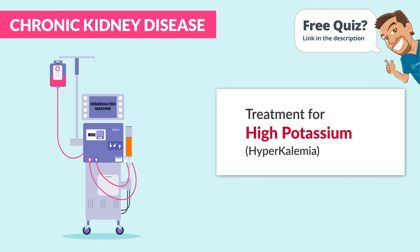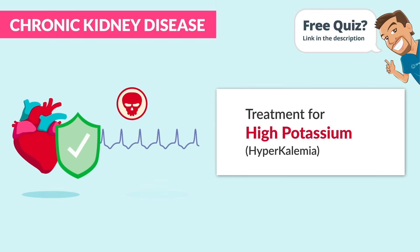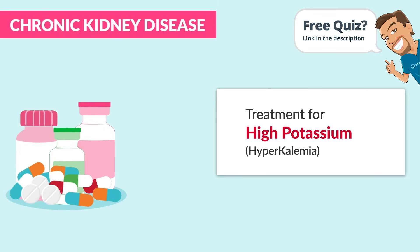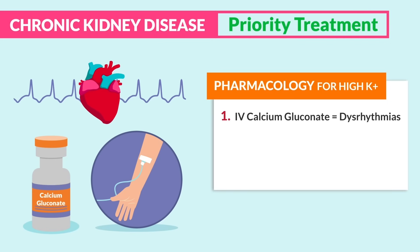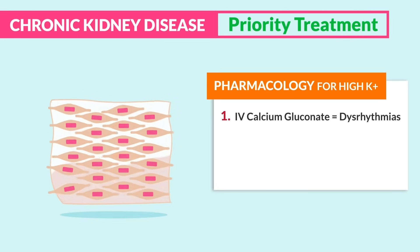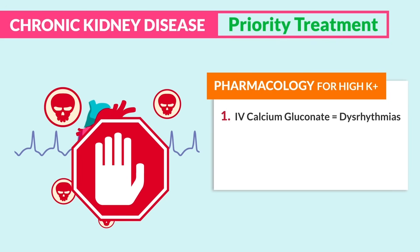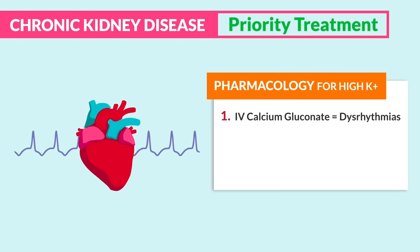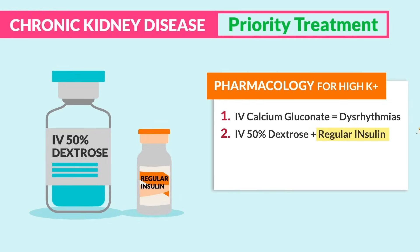The long-term solution is dialysis, but the immediate priority is to lower potassium and protect the heart from deadly dysrhythmias using drugs in a specific order. Priority treatment number one: IV calcium gluconate — for the key term 'dysrhythmias.' Think gluconate helps 'glue down' those crazy heart muscles, preventing deadly dysrhythmias like wide QRS complexes from progressing into VTAC and VFib.